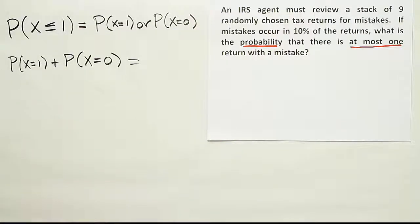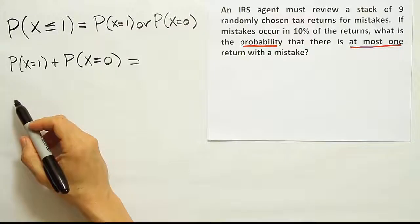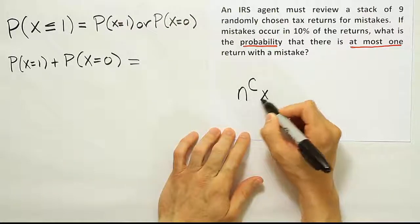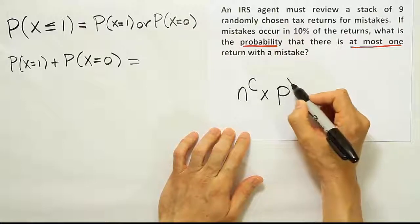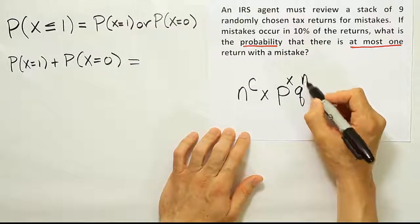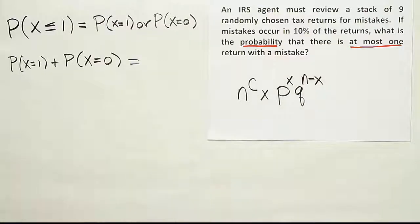So let's go ahead and use binomial probability. The formula in general is n choose x, the probability of success to the x power, the complement of that probability to the n minus x power.